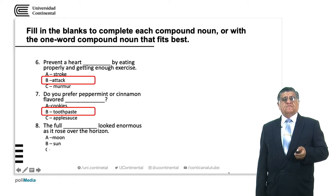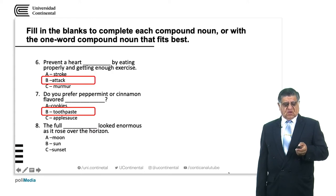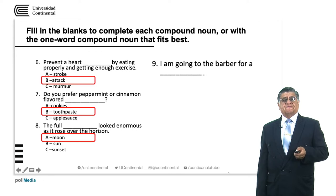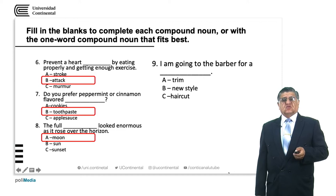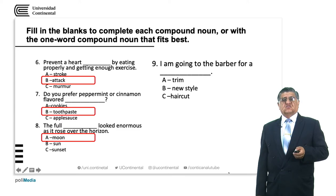Exercise three: 'The full _____ looked enormous as it rose over the horizon.' Options: full moon, full sun, full sunset. We know this word, so we choose full moon. Exercise four: 'I am going to the barber for a _____.' Options: a trim, a new style, a haircut. Trim is to cut something. In a barber you normally have a haircut.